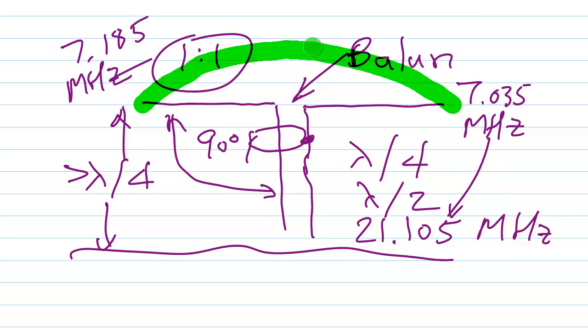The third harmonic, you get another current loop. You always want to have a current loop, that means a current maximum at the feed point of an antenna that you feed with 50 ohm coax. Otherwise, you'll have a very high standing wave ratio.